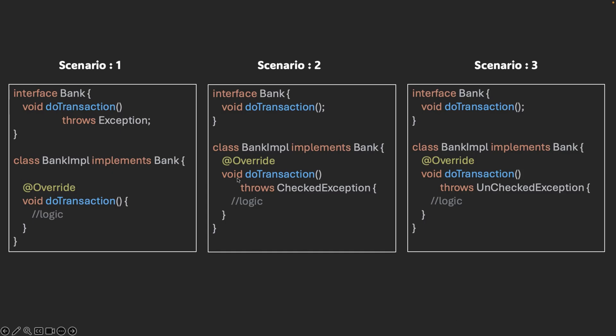So we have understood all three different scenarios. This is how you can try to convince the interviewer about this type of scenario when it comes to the exception contract in inheritance.